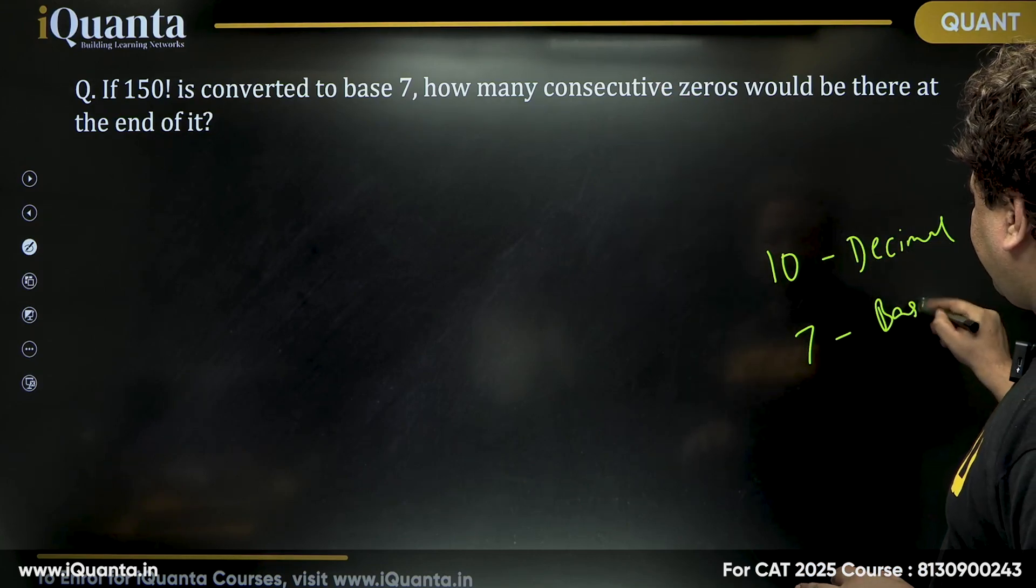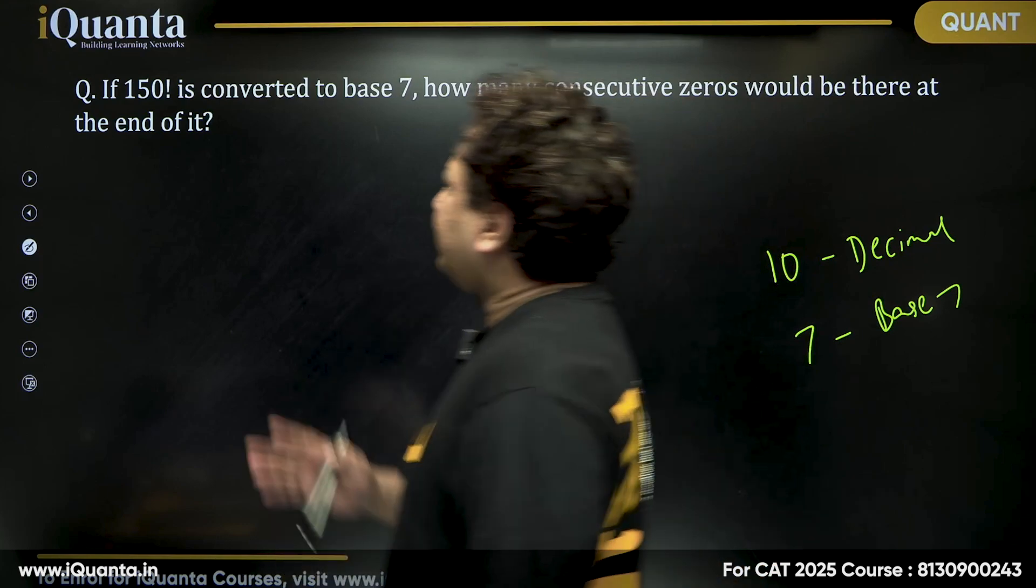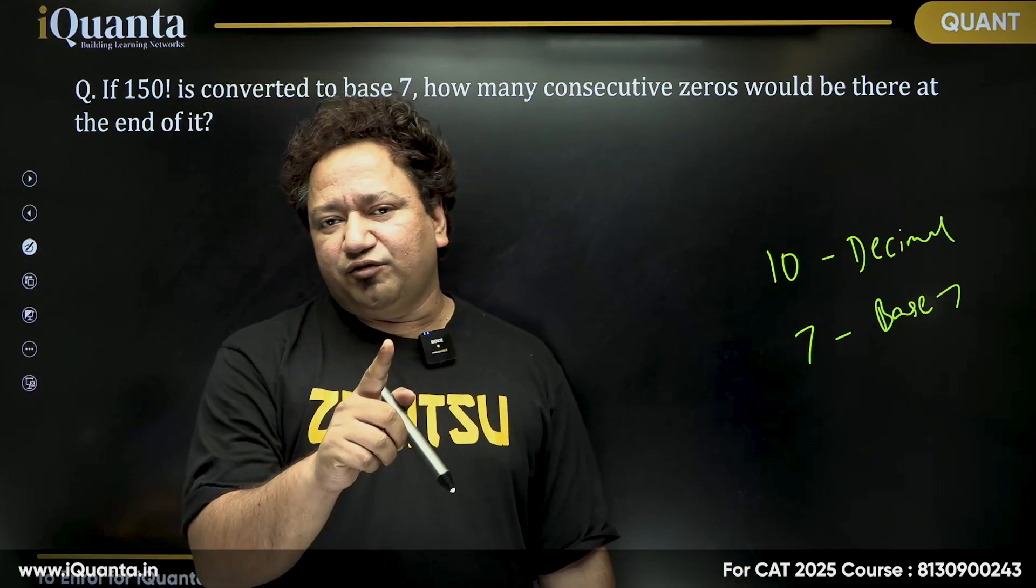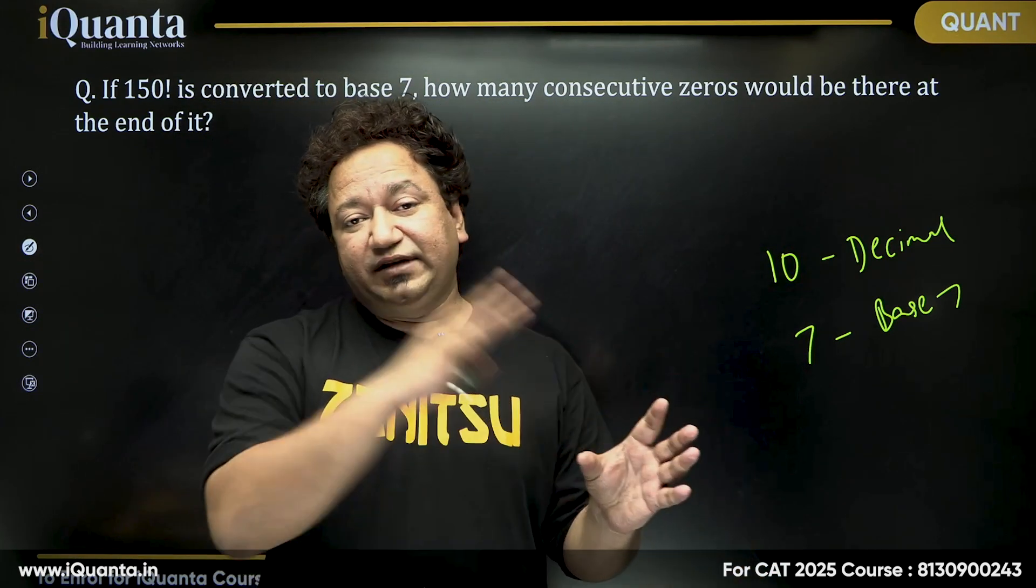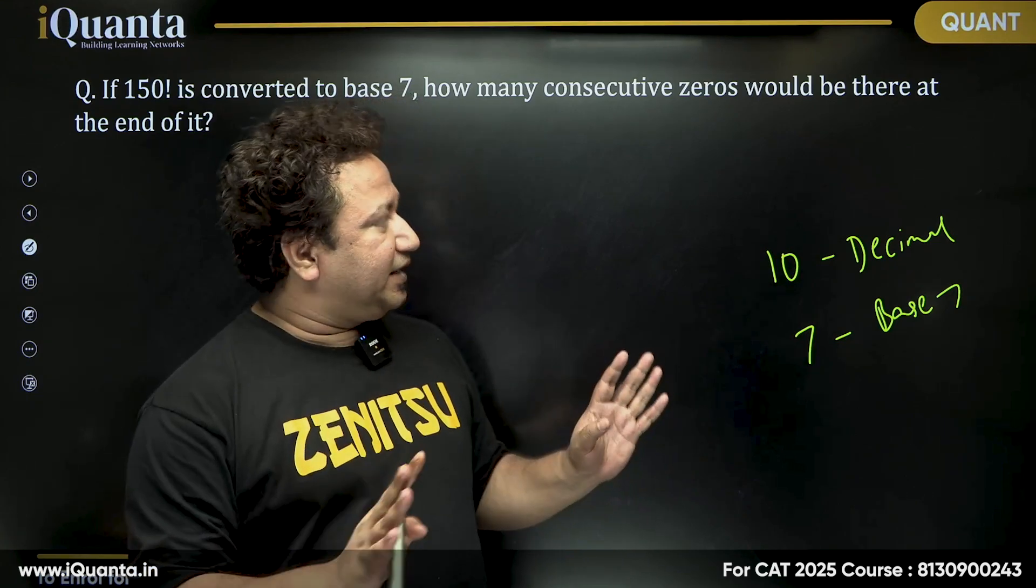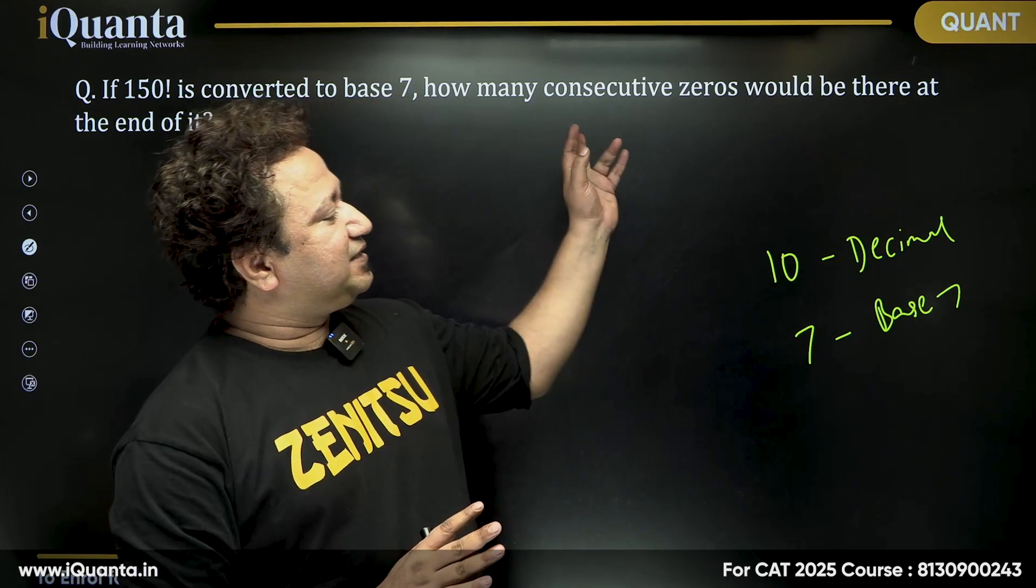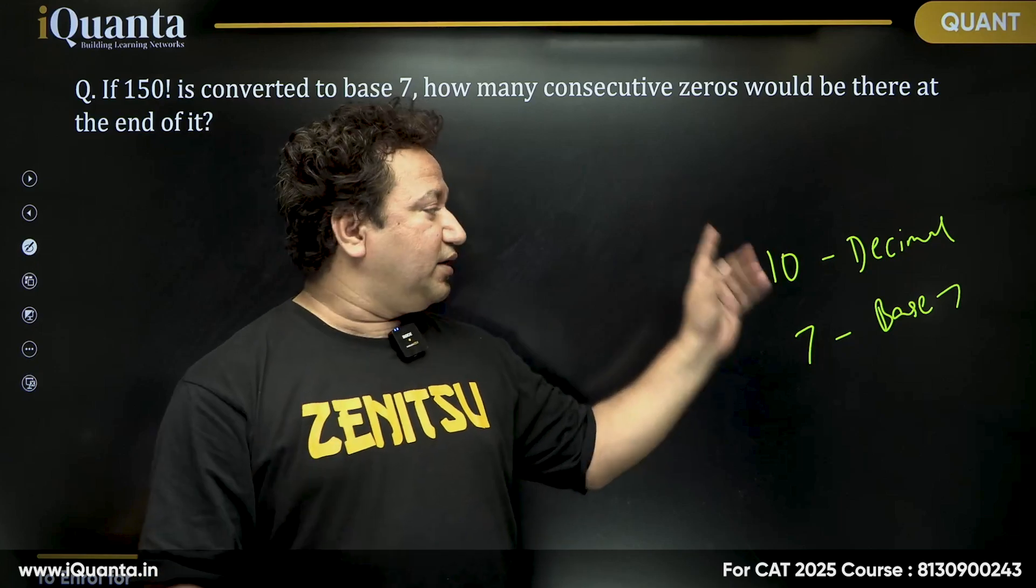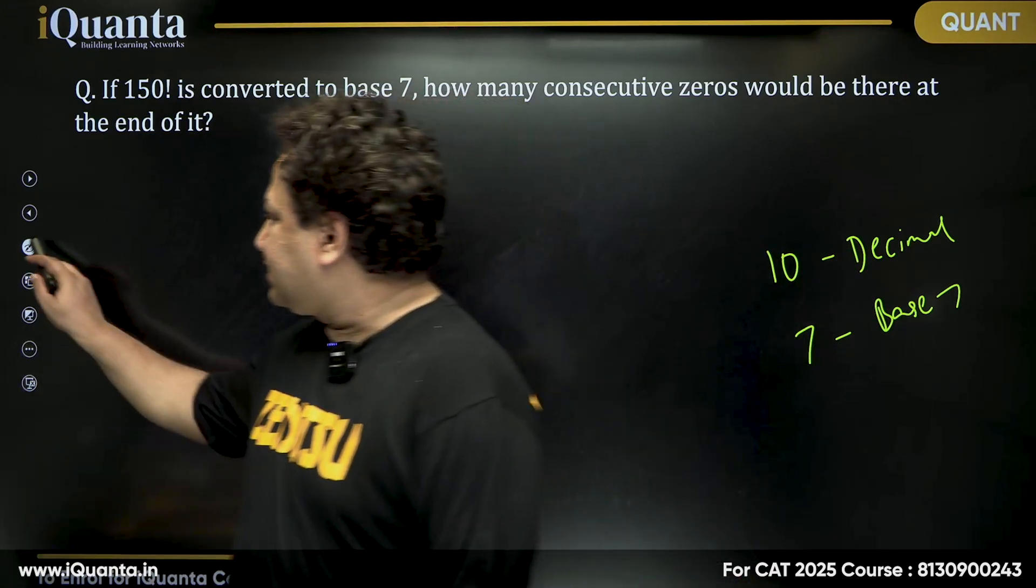So basically, whatever base is given to you, let's say it's converted to base 8, then the value of 8 would correspond to value of 10 in decimal number system. So if the base is x, then the value of x will correspond to 10 in decimal number system. So our life becomes really easy here.